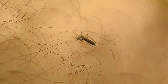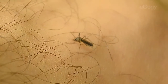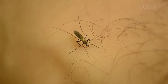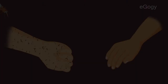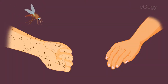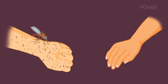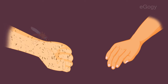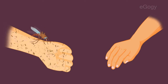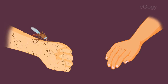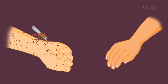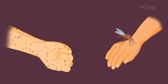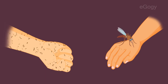Mosquitoes play an important role in the spread of many diseases. When a mosquito bites an infected human or animal, it can pick up a virus along with a blood meal. The mosquito and virus do not harm one another, but the virus reproduces inside the mosquito.